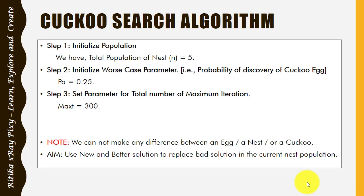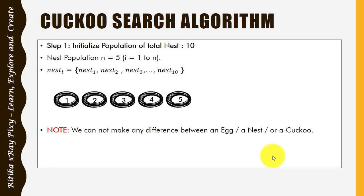These parameters are sufficient for maximum optimization problems. The third step is to set the maximum number of iterations, which is 300 here. One important point: we cannot make any difference between a cuckoo egg and a nest. The aim of this algorithm is to replace bad solutions with new and better ones from the current population.